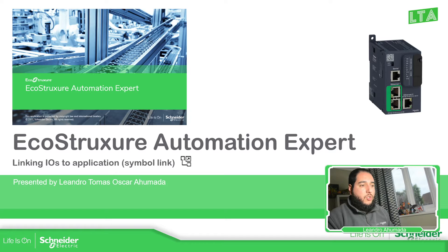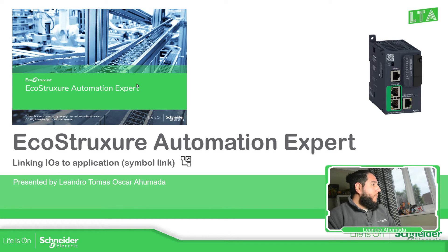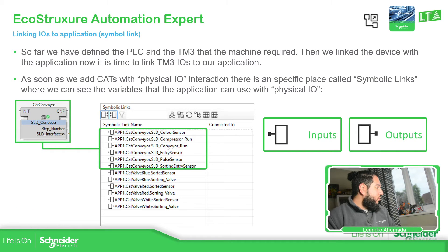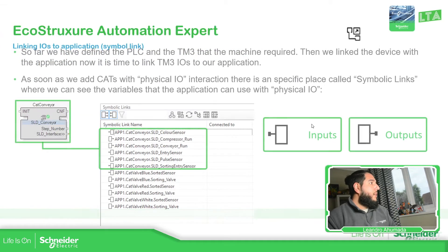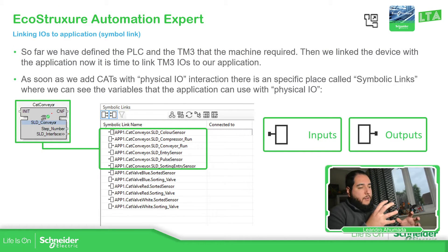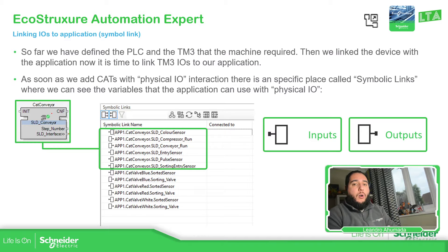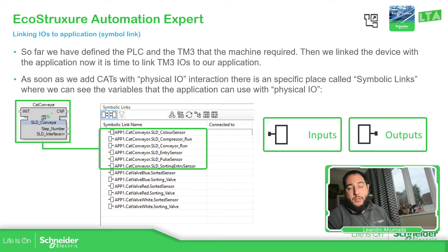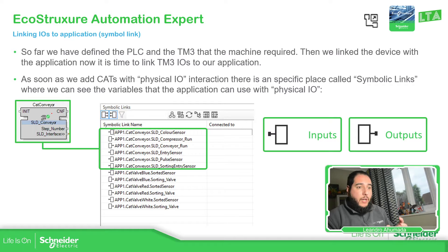So let's go to the presentation. This linking IO process is made by the symbol link inside the application. As soon as we create a CAT, or in this particular case when we use the instance block of the CAT, the conveyor, or the pulse, it will create a symbol link — like a symbol variable, as we use in Machine Expert, but here it's called symbol link. This creates that variable, and depending on the variable that we have, it can be input or output.